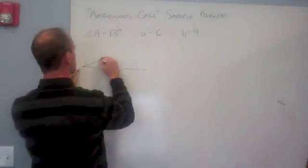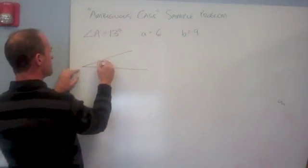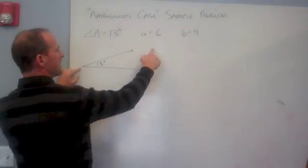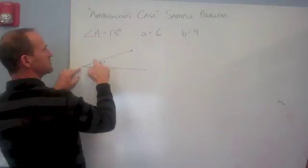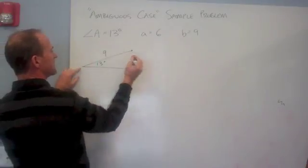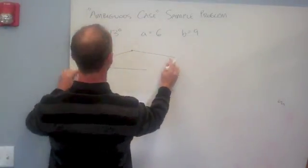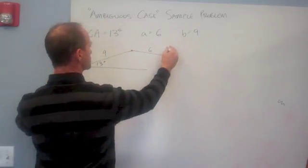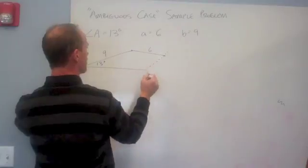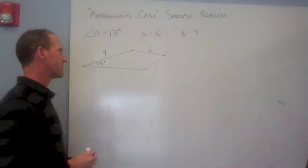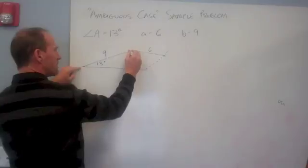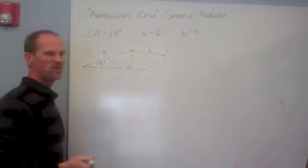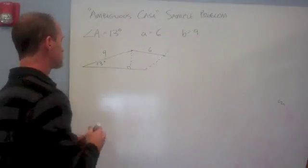So if I draw angle A over here, 13 degrees is not a big angle. The opposite side is going to be 6, and this is the side that I'll choose to be B. So if this is 9, 6 is going to be hanging out here, hinging. It'll be a little less than 9, so it'll be like this. And the question is when this swings down, will I get 0, 1, or 2 triangles? So you've got to figure out what is this gap right here, and then is 6 big enough to bridge that gap? Well, it looks like it based on my drawing, but let's do it mathematically.